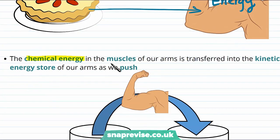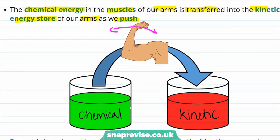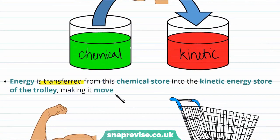Well the chemical energy in the muscles of our arms is transferred into the kinetic energy store of our arms as we push. So in this picture we're imagining that we use the chemical energy to be able to move our arms backwards and forwards giving them kinetic energy. Since we are holding the trolley this kinetic energy goes into the kinetic energy of the trolley. So all in all energy is being transferred from this chemical energy store into the kinetic energy store of the trolley making it move.